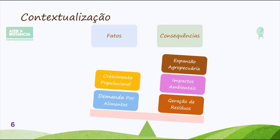No entanto, quando esses resíduos são devidamente tratados — pelo processo de utilização como cobertura morta no plantio direto, no processo de compostagem ou no processo de biodigestão — ele sai desse ponto de vista negativo dos impactos ambientais e se torna um ativo dentro da propriedade rural. Com a utilização dos resíduos orgânicos compostados, eu reduzo a necessidade de adquirir insumos agrícolas, de comprar esses fertilizantes.